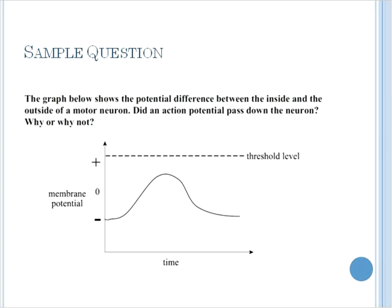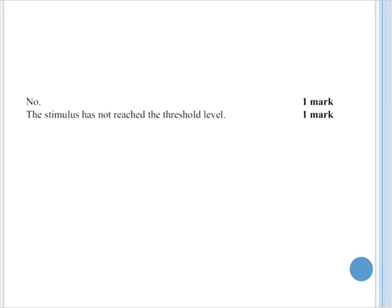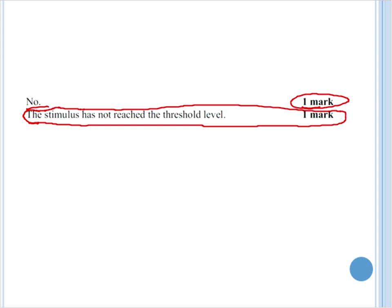A further constructive response question. The graph below shows the potential difference between the inside and outside of a motor neuron. The question at hand is did an action potential pass down the neuron? Why or why not? The key thing to know here is that this indicates what the threshold level is. Remember that unless a signal crosses threshold no action potential will be generated. You can see that in this case the membrane potential is negative, it started to rise then it dropped off. At no time did the voltage potential cross threshold. So the answer to this question would be no it has not for one mark. Simply, very important, you must state the stimulus has not reached a threshold level. Simply saying no would give you one point out of two.